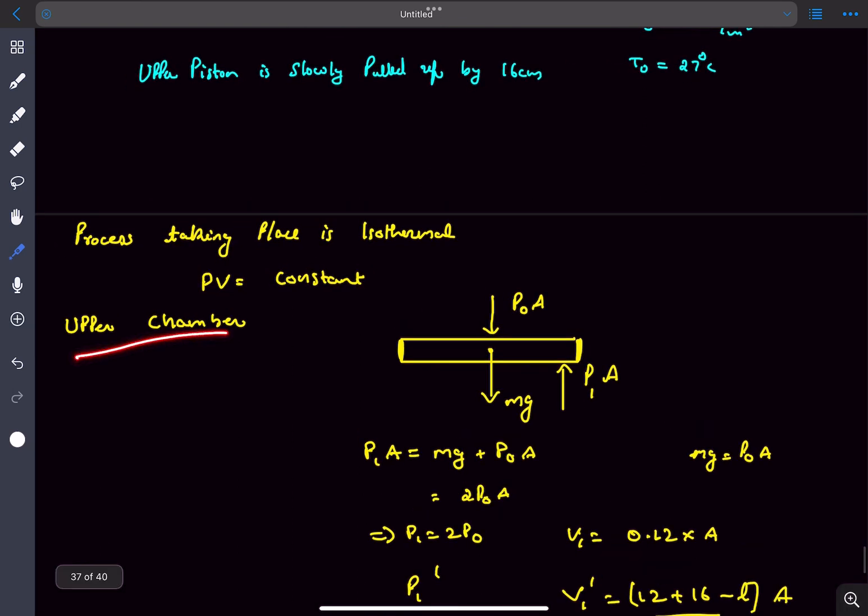If we draw the FBD of the upper chamber, the forces acting on the piston will be the weight of the piston, the force due to atmospheric pressure equal to P0 times A, and the initial pressure of the gas in the upper chamber is P1, so the gas applies a force of P1 times A. As all of them are in equilibrium, we can balance the forces and get the value of P1 to be 2P0, as it is given that mg equals P0 times A.